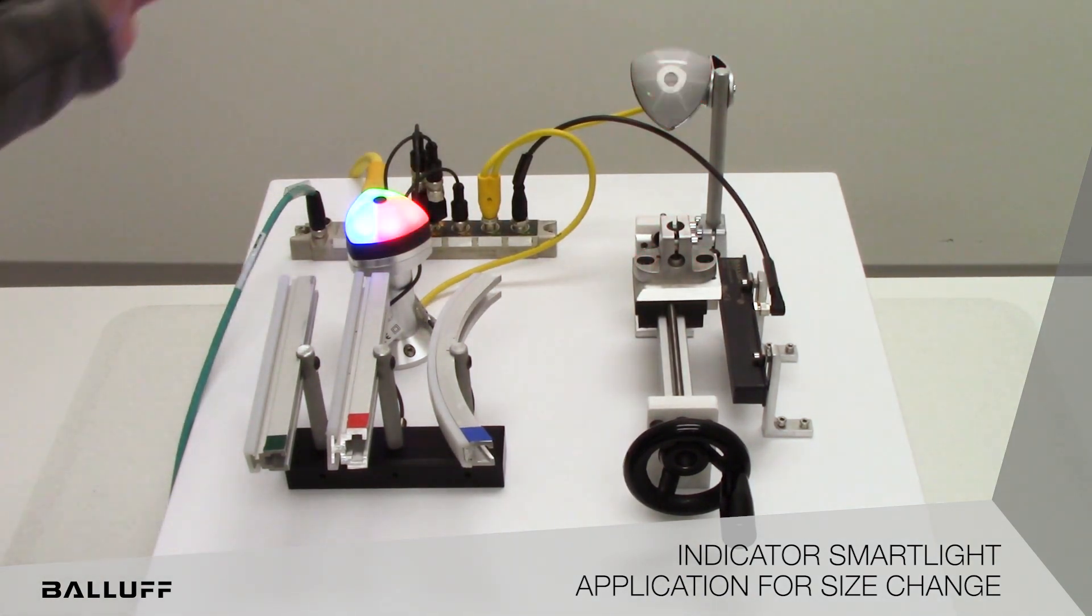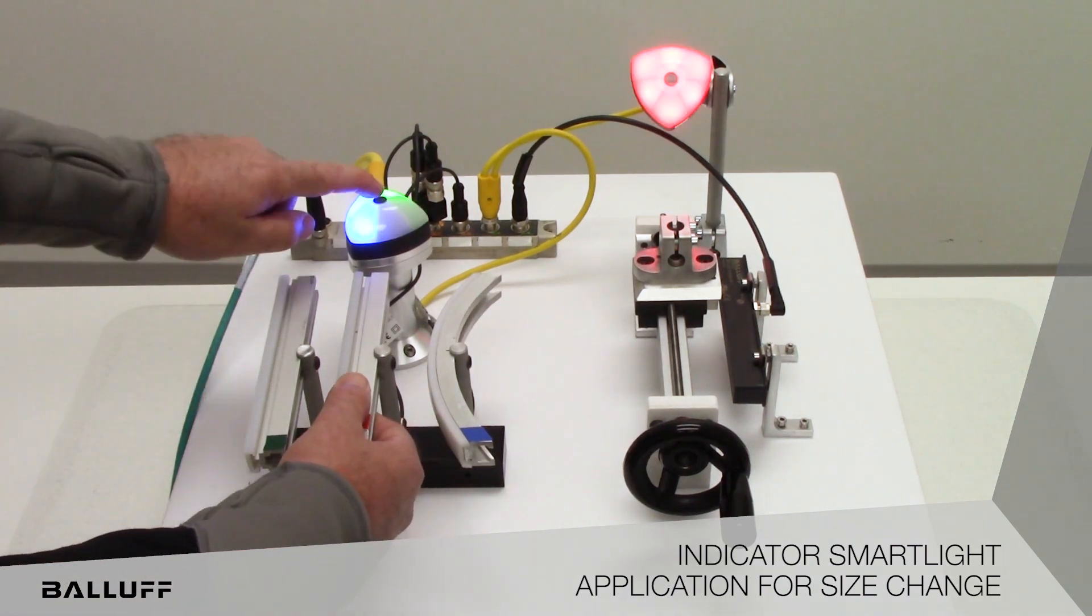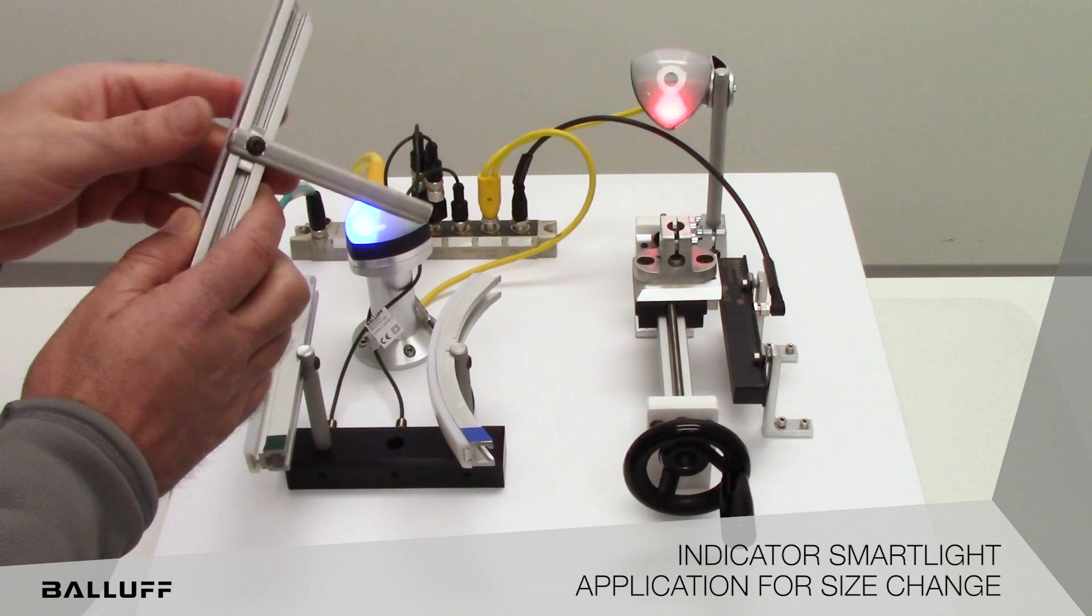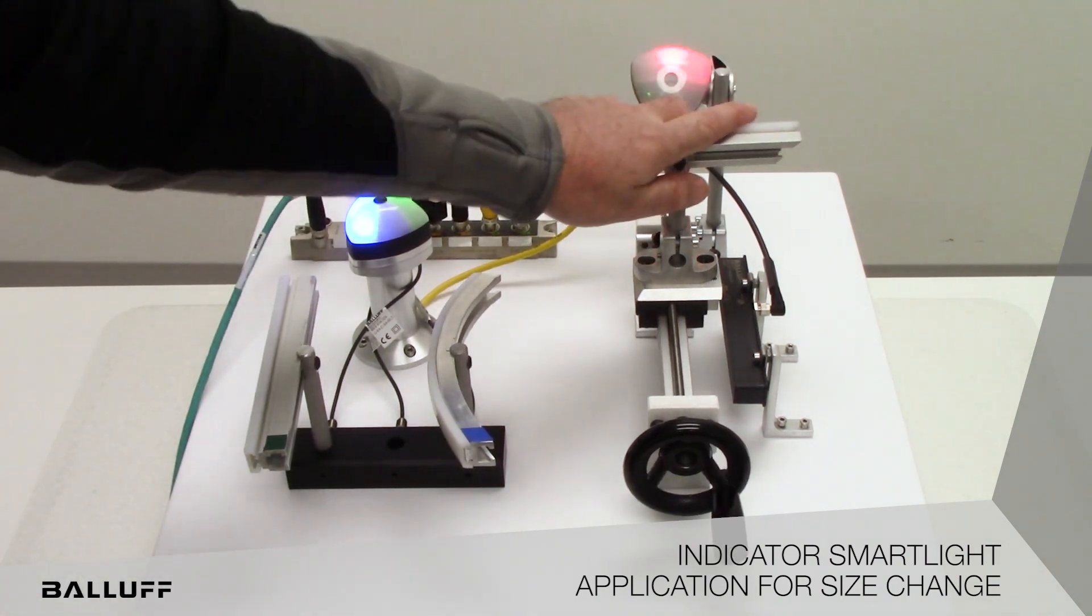And of course a Balluff IO-Link master. So in this application you can see our light is indicating that we're looking for the red component to be put into the machine, and this light is also telling me that, so I'm going to pull that and we'll install that in the machine.